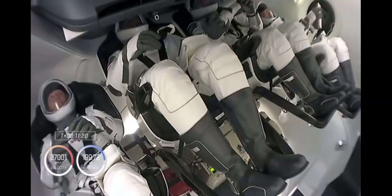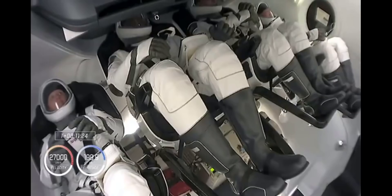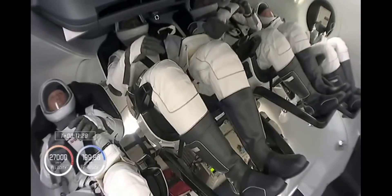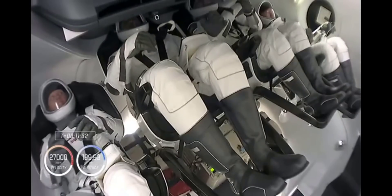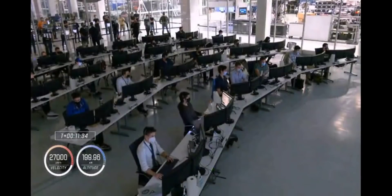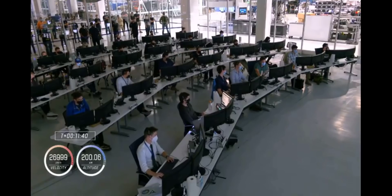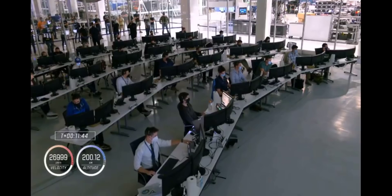First trip to space for Victor Glover. Acquisition of signal in Newfoundland. And that call-out acquisition of signal in Newfoundland. That means the Newfoundland ground station is now receiving telemetry from Dragon. This view inside Mission Control Hawthorne. Teams continuing to monitor the vehicle. Now traveling at almost 27,000 kilometers an hour.